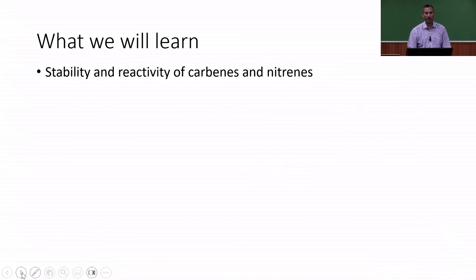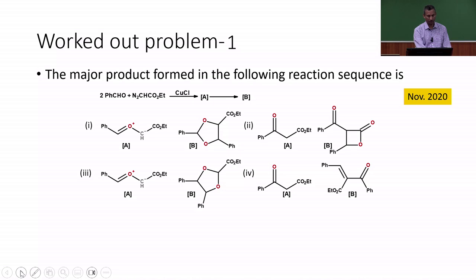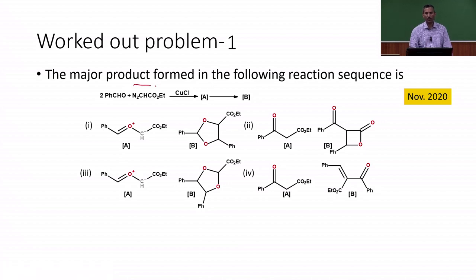In this session, we will be looking at the stability and reactivity of carbenes and nitrenes. Let us look at the first problem. We are going to find out the major product formed in the following sequence of reactions. This question was asked in November 2020.